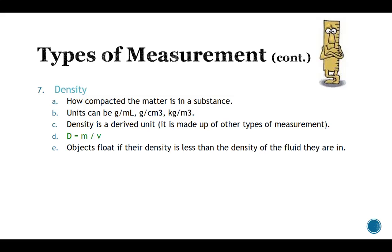So objects float if their density is less than the density of the fluids they are in, whether that fluid is air, whether that fluid is a liquid. So we just have to think about the relationships. Again, d equals m over v is a mathematical relationship that expresses the relationship between the parts and how we determine density.